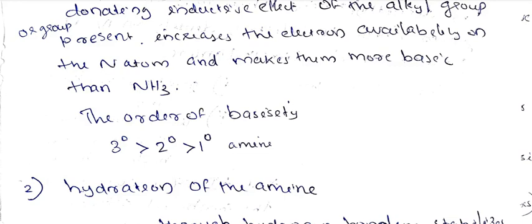What is a tertiary amine? In a tertiary amine, there are three alkyl groups: R, R', and R double dash. These three alkyl groups provide three electron-releasing effects to the nitrogen atom, increasing its electron density.